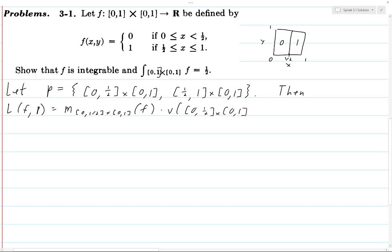plus m_{[1/2,1] × [0,1]}(f) times the volume of [1/2,1] × [0,1]. So m of a set - m of a rectangle S evaluated at f -